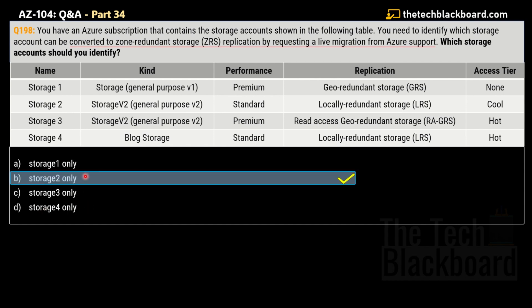The options are: A — Storage 1 only, B — Storage 2 only, C — Storage 3 only, D — Storage 4 only. The correct answer is option B, Storage 2 only. Storage 1 and Storage 3 will not support live migration given their kind, performance, and replication. Importantly, only Standard storage accounts support live migration — this also rules out Storage 1 and Storage 3. I'll leave Storage 4 for you to analyze — try to find the arguments for why it's not selected and let me know in the comment section.